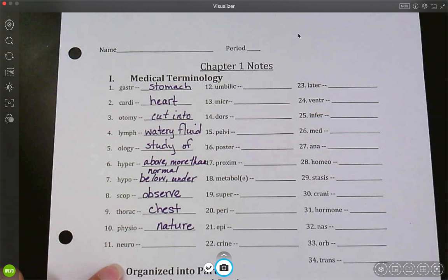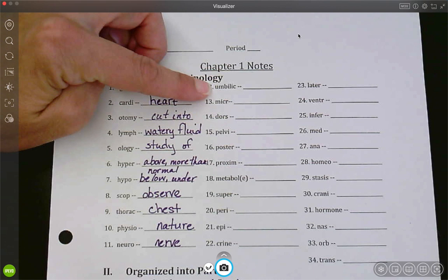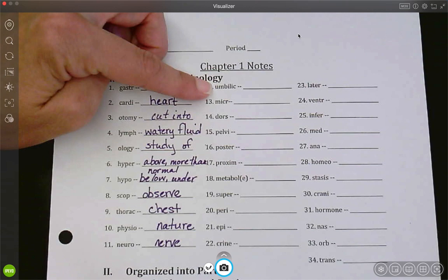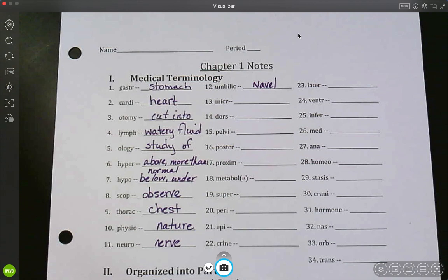Neuro. Nerve. Like a neurologist is going to look at the brain, spinal cord, and the nerves. Umbilic. If you get an umbilical piercing, umbilical cord. Navel. So it's talking about the belly button.